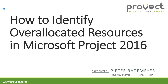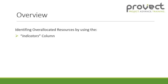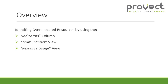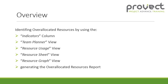In this video we will focus on how to identify over-allocated resources in Microsoft Project 2016. We will be identifying over-allocated resources by using the indicator column, the team planner view, resource usage view, resource sheet view, the resource graph view, and we will also be generating the over-allocated resource report. Now let's open Microsoft Project 2016.